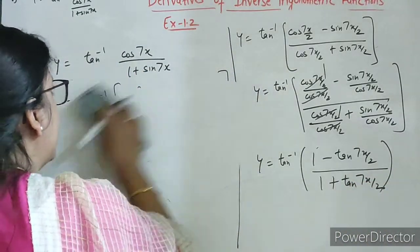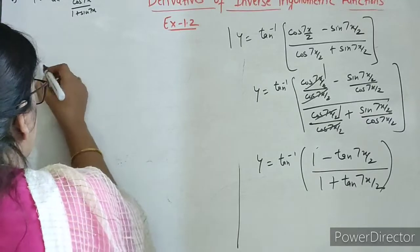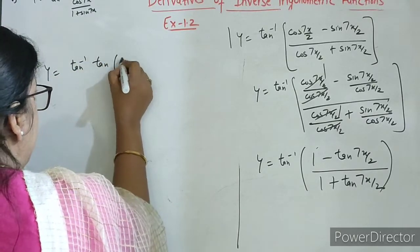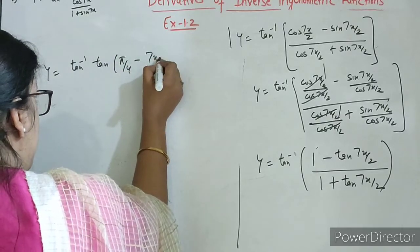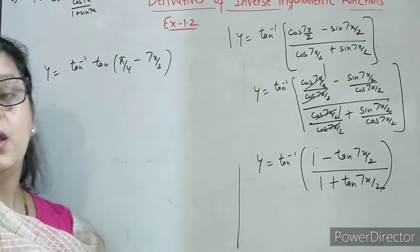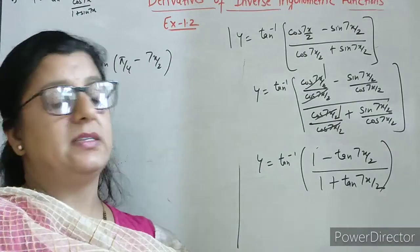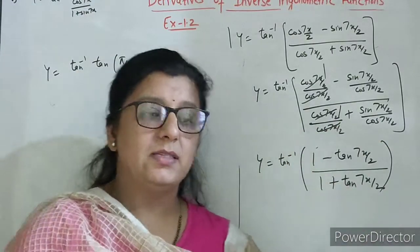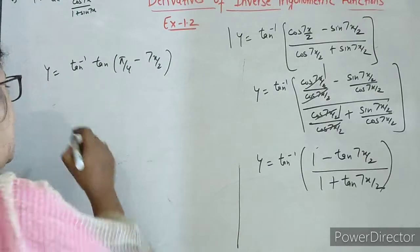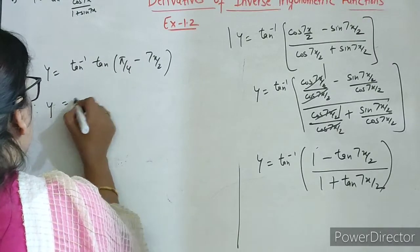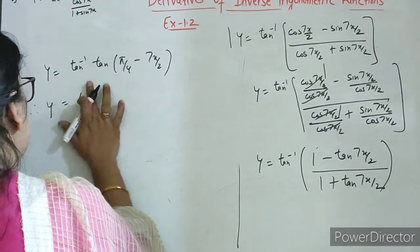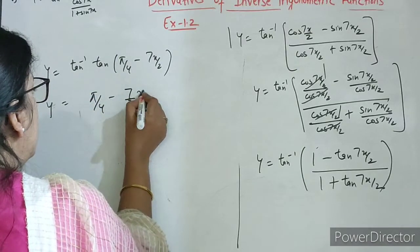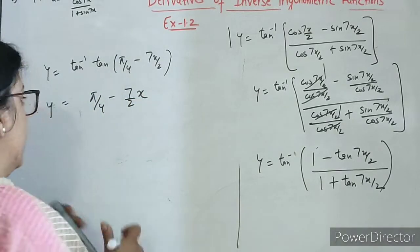Abhi yeh formula kiska hai students? This we can write as tan of pi by 4 minus 7x by 2. Because tan of pi by 4 minus x is 1 minus tan x upon 1 plus tan x. Toh yeh put kar diya. Now which property we can use? Tan inverse tan x is x. So yeh ho jayega pi by 4 minus 7x by 2.